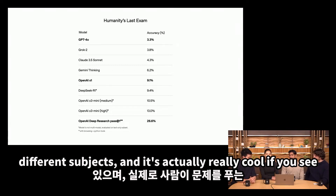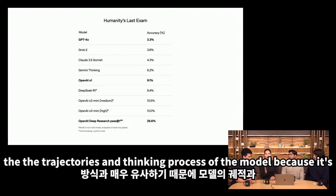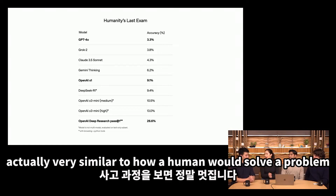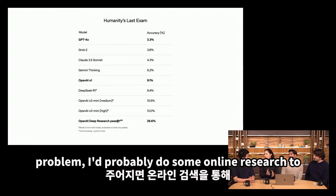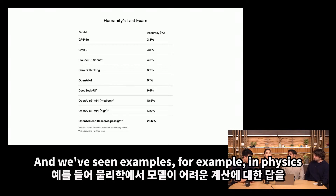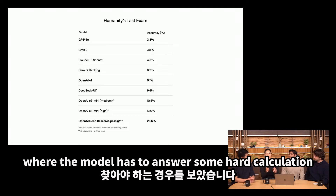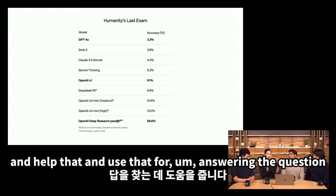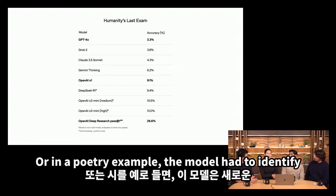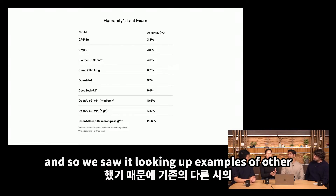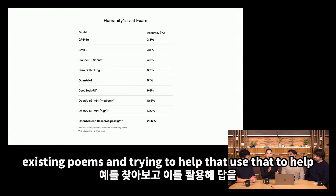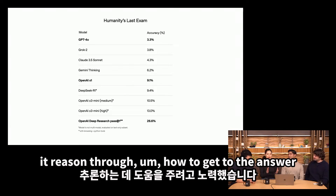It's really cool to see the trajectories and thinking process of the model because it's actually very similar to how a human would solve a problem. If I was given a really hard problem, I'd probably do some online research to help figure out the answer. We've seen examples in physics where the model has to answer a hard calculation — it will look up an equation in an existing scientific paper and use that to answer the question. Or in a poetry example, the model had to identify a very niche poetic meter and looked up examples of other existing poems to reason through the answer.